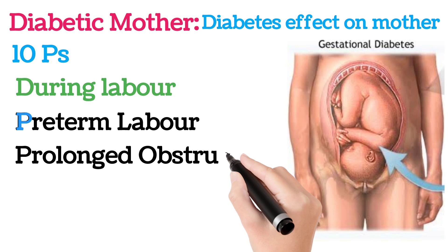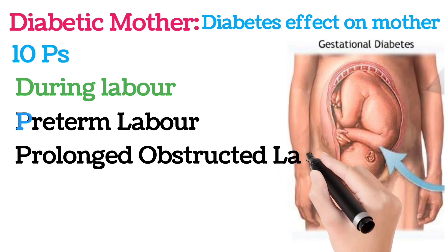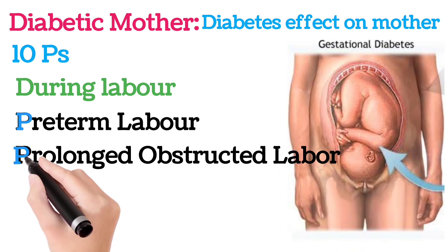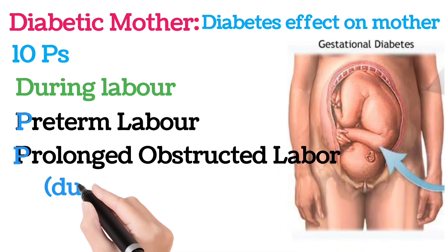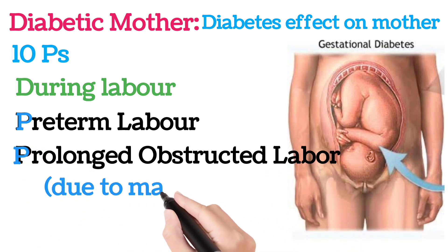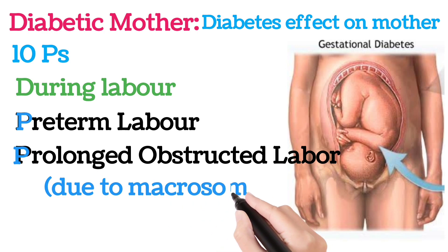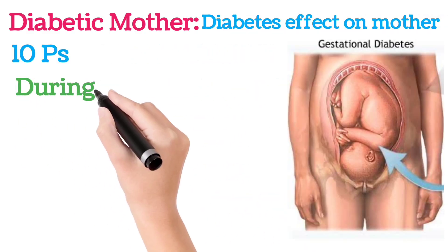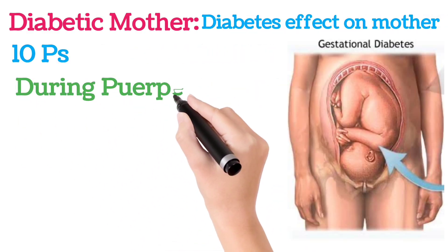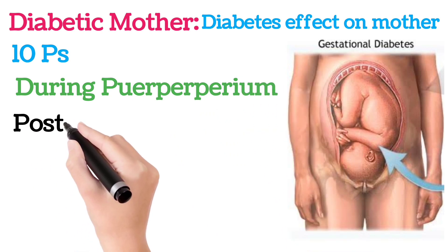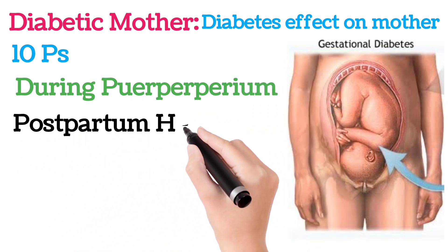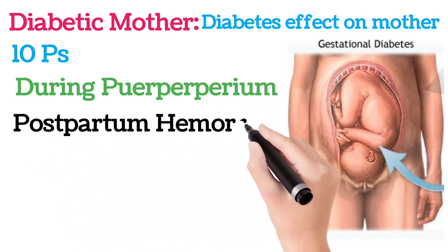The second labor P is prolonged or obstructed labor due to macrosomia. During the puerperium there are 3 Ps, the first being postpartum hemorrhage.